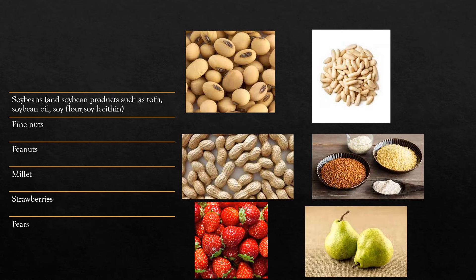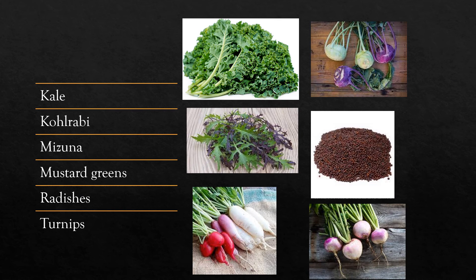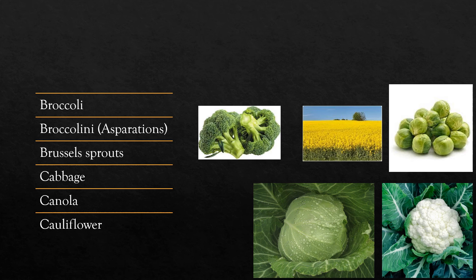Goitrogenic foods include: soya beans, pine nuts, peanuts, millet, strawberries, pears, Chinese cabbage, choy sum, collard greens, horseradish, Chinese broccoli, kale, kohlrabi, mizuna, mustard greens, radishes, turnips, peaches, spinach, bamboo shoots, sweet potatoes, bok choy, broccoli, Brussels sprouts, cabbage, and canola.